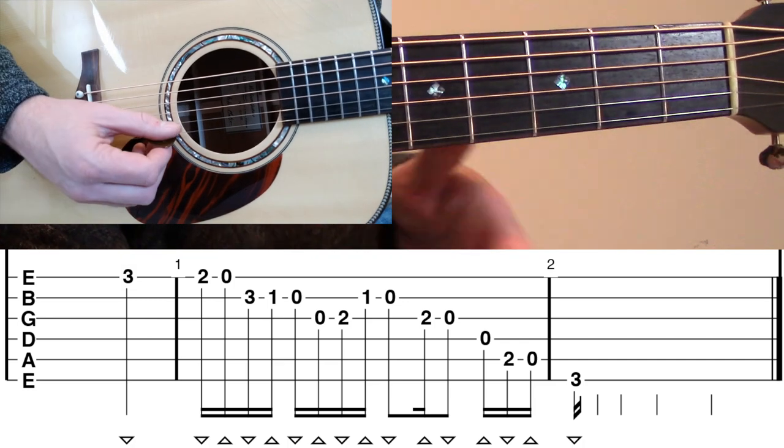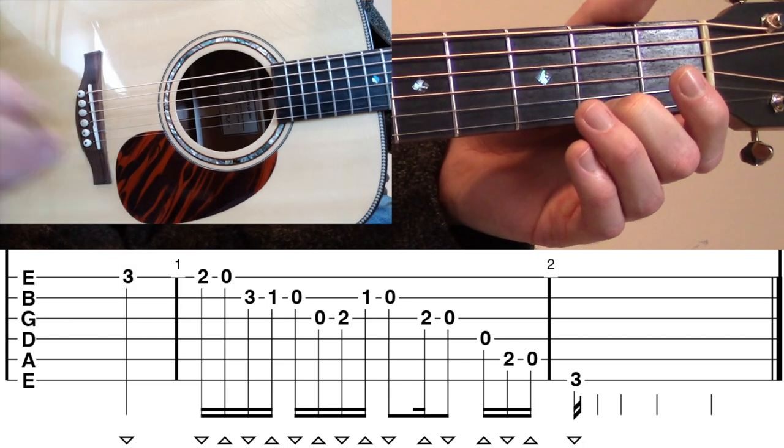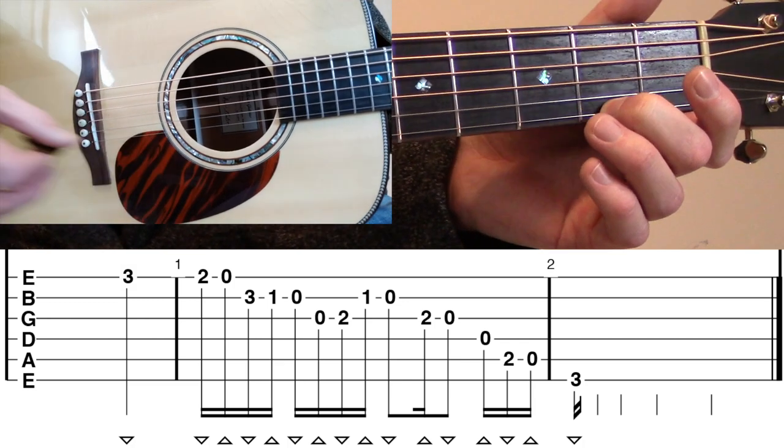So it's kind of a double downstroke there to start, and then from here we're just going to start doing an alternating picking descending line starting with the high register.